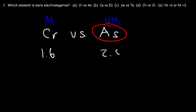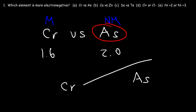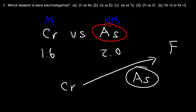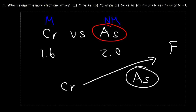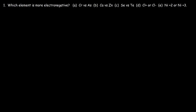The electronegativity value for chromium is 1.6 and for arsenic it's 2.0. You can also place them in their respective positions on the periodic table — chromium is to the left of arsenic. Since electronegativity increases towards fluorine, arsenic is closer to fluorine than chromium is, so arsenic has a higher electronegativity value.